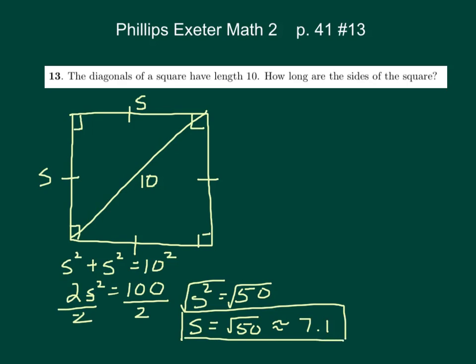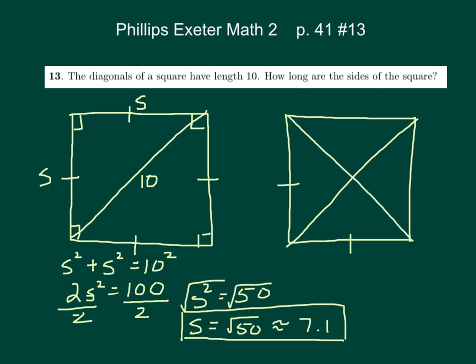Now we could do the same thing. Another way we could think about it is if we draw another square here. It says the diagonals of a square have length 10. So we could draw a square with both diagonals. Both have length 10.